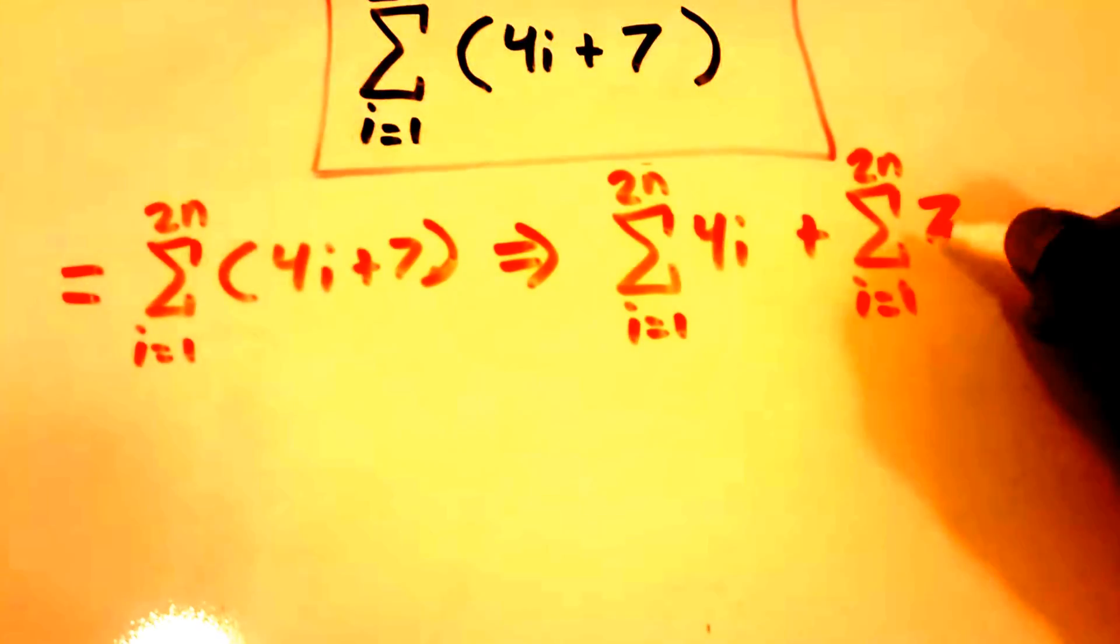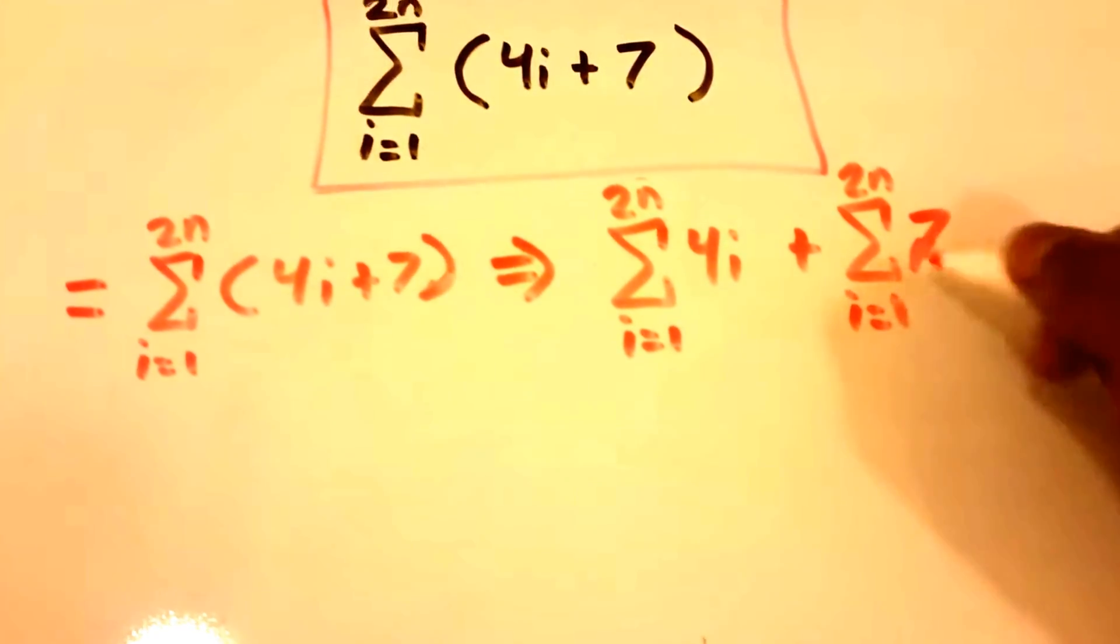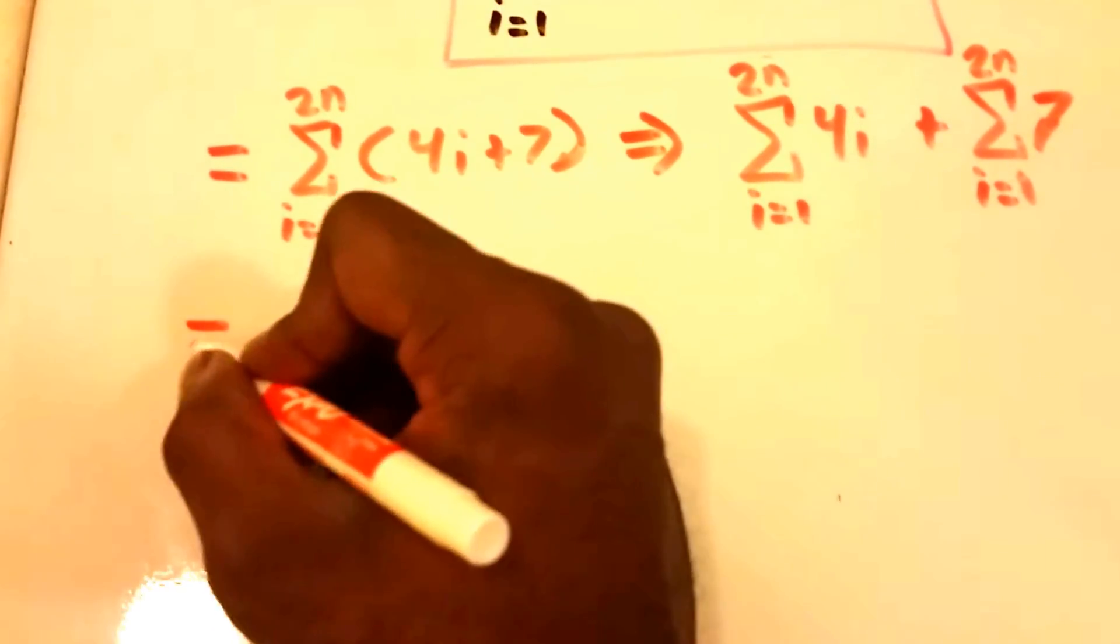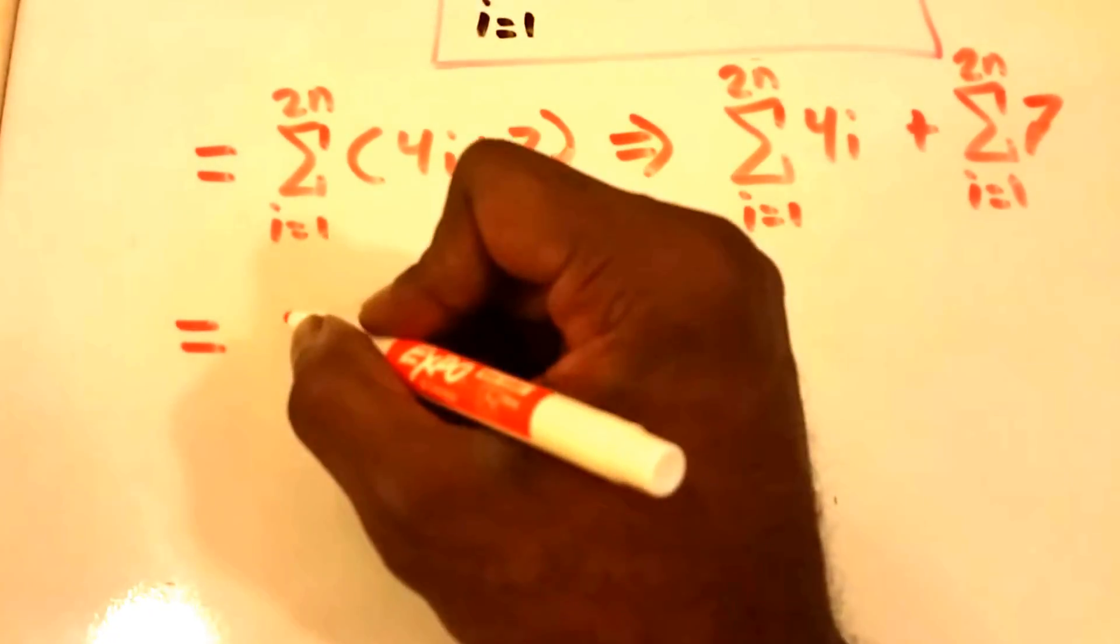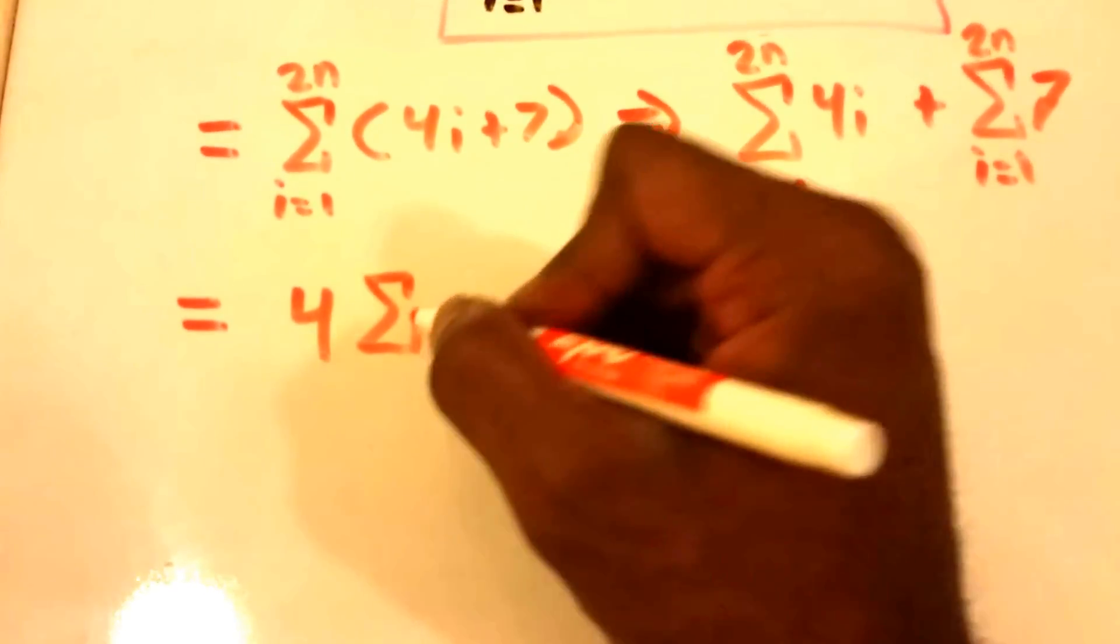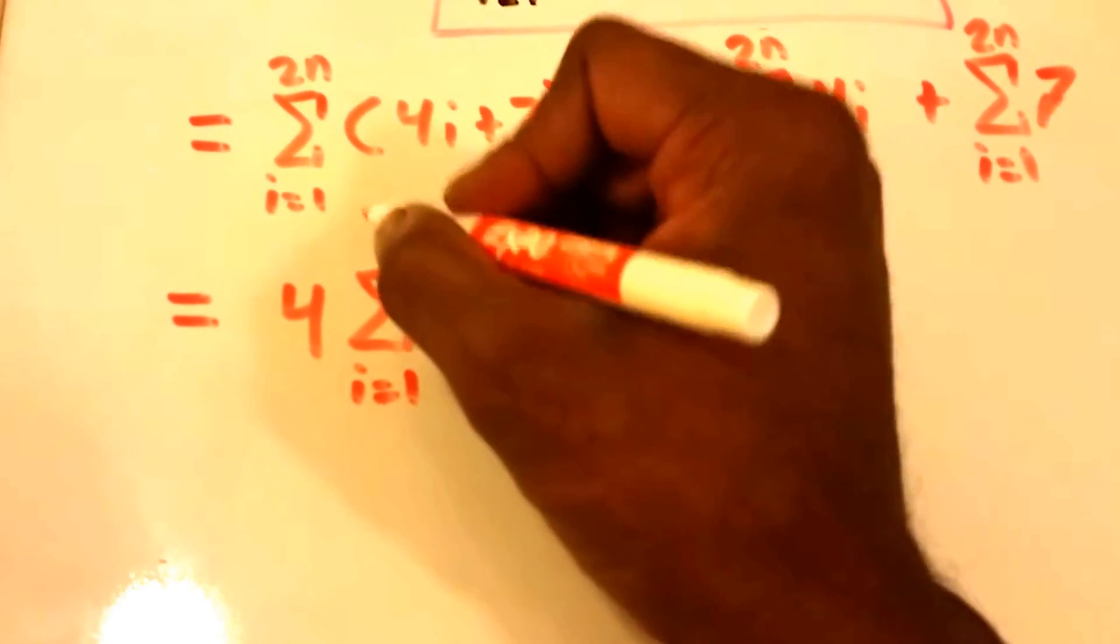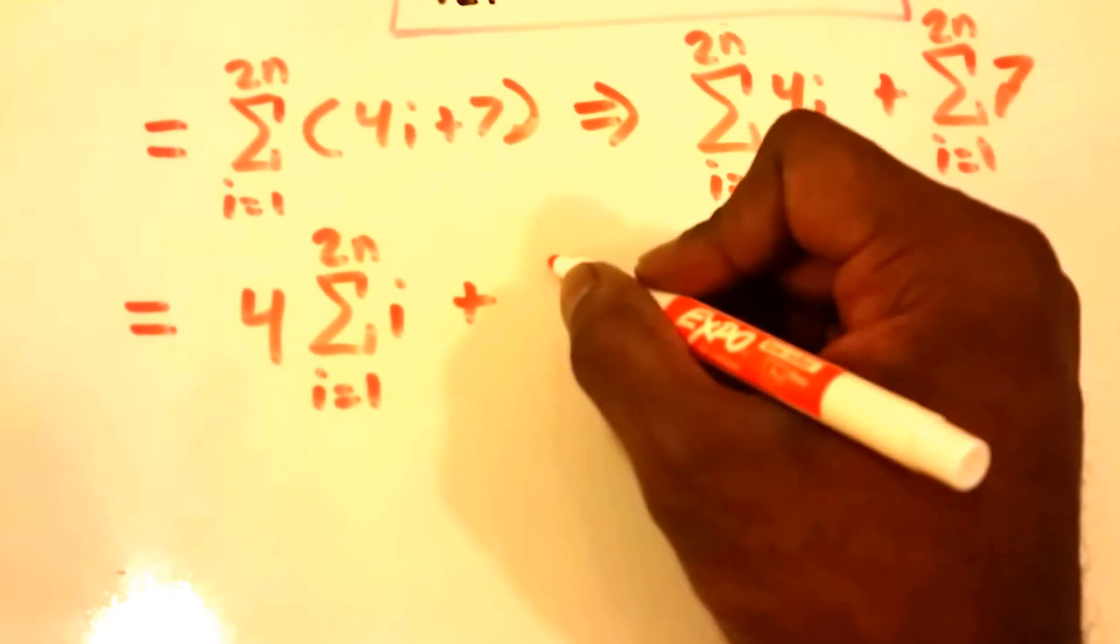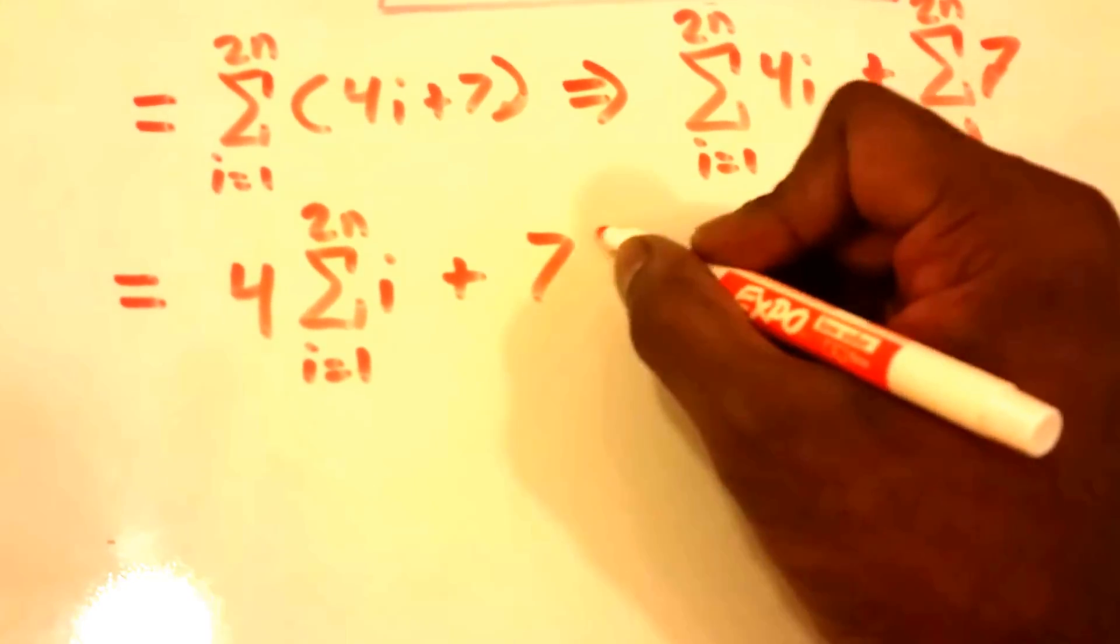Okay, so now what we're going to do is we're going to take out the constants. So we get 4 times the summation from i equals 1 all the way to 2 times n of i, plus 7 times the summation.